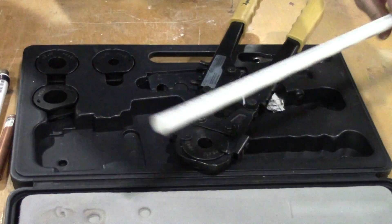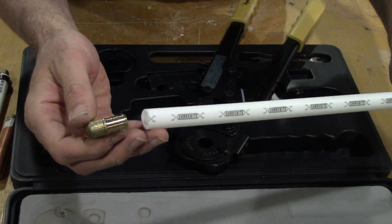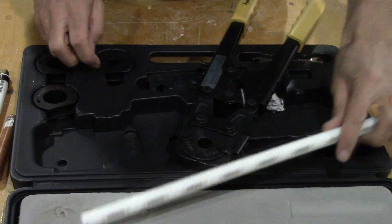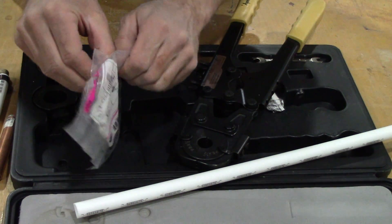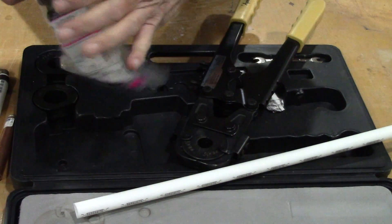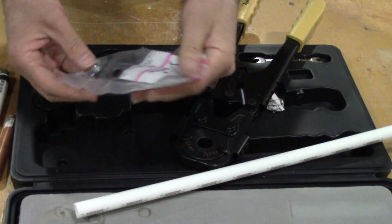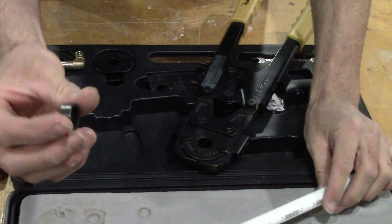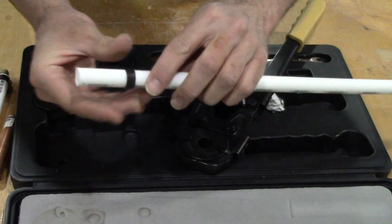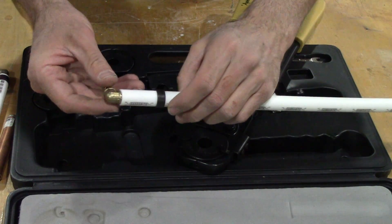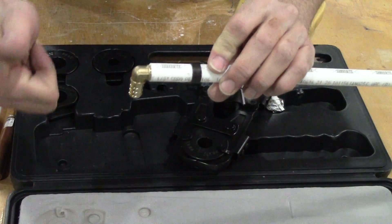I've got a brass fitting here, this is a 90 degree. Before you put this in, obviously you need to put the ring on first. These are SharkBite brand crimp rings, it's just a metal collar. It's going to go on like that, and the piece goes in just like that. Now we're ready to crimp.